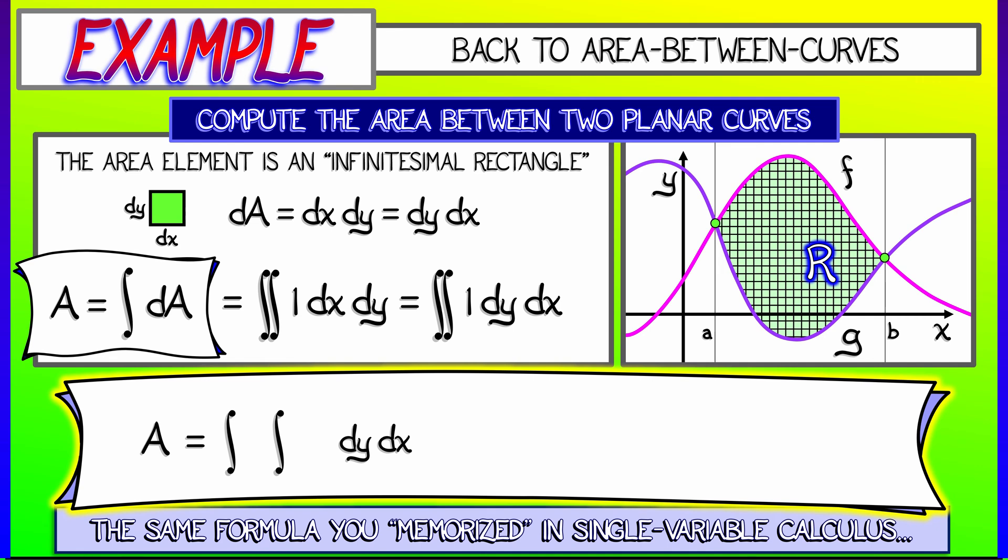If we integrate with respect to y first, fixing x as a constant, then what are the limits on y? Y goes from g of x to f of x. And then having integrated out the y direction, what are the limits on x? x goes from a to b.